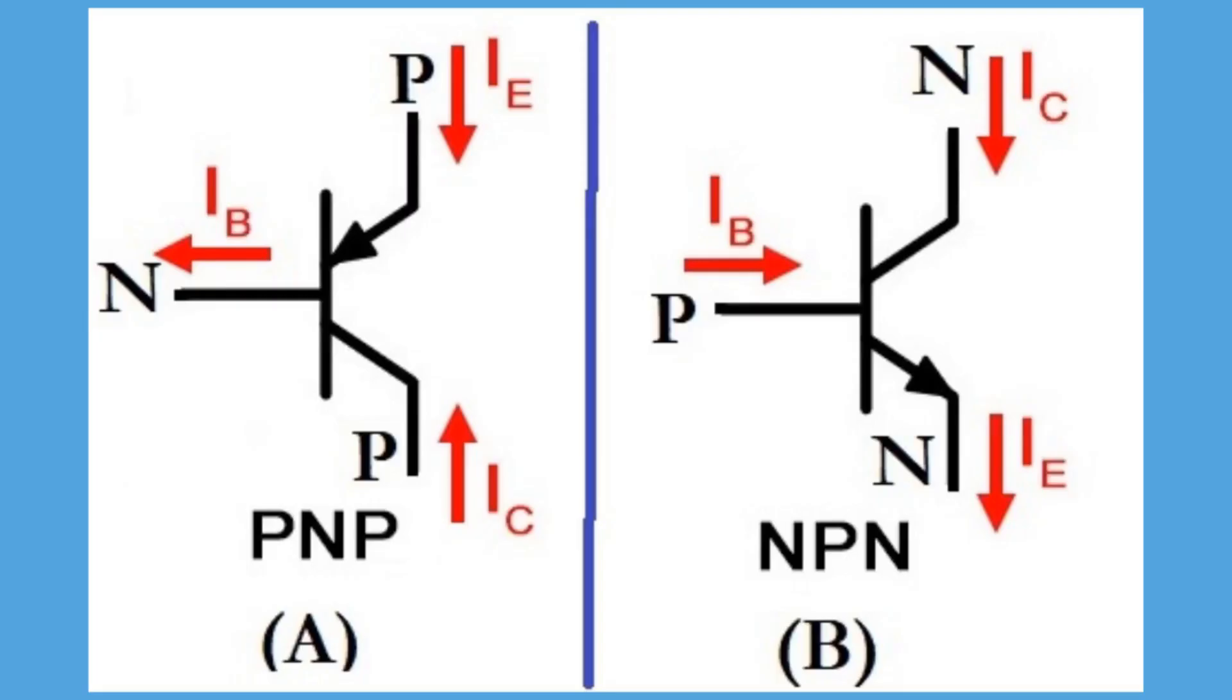For example, look carefully at these diagrams that I have drawn of bipolar junction transistors. Remember we said that letter P stands for the anode and letter N stands for the cathode. Diagram A shows a PNP type of transistor and diagram B shows NPN type of transistor.